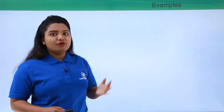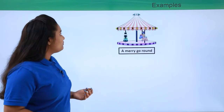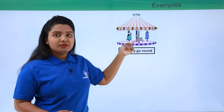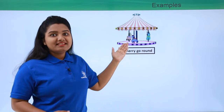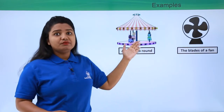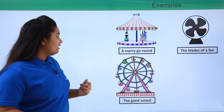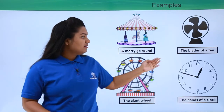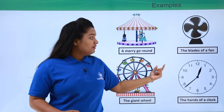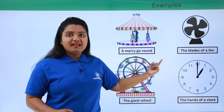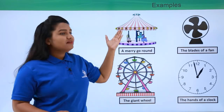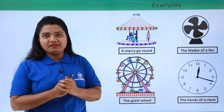Now let's look at some examples of uniform circular motion. A merry-go-round is one example — each unicorn moves along a circular path with constant speed. Similarly, the blades of a fan also undergo uniform circular motion. In the same way, a giant wheel and the hands of a clock are also in uniform circular motion, since the velocity changes at every point while the speed remains constant throughout.